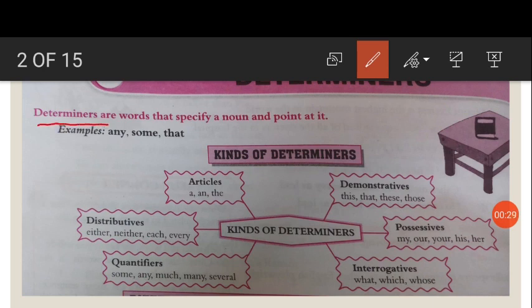Determiners are the words that specify a noun and point at it. The words which specify a noun and point at that noun are called determiners. Determiners are always placed before a noun.